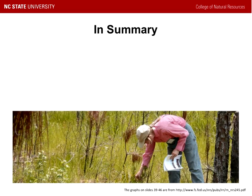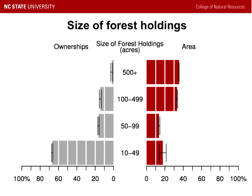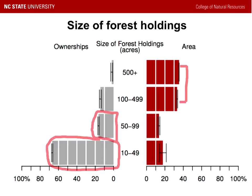To summarize: the majority of southern landowners own less than 100 acres by number of owners. However, the majority of forest land by area is being held in tracts 100 acres or more in size. So while most individual owners have smaller parcels, most of the forested acreage is concentrated in larger holdings.